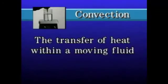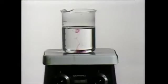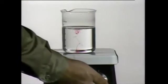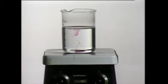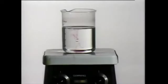Another form of heat transfer is convection. Convection is the transfer of heat within a moving fluid. Convection can be divided into two categories: natural convection and forced convection. We'll use this container of water and dye to show how natural convection works. As the water is heated, the water closest to the bottom is heated more than the water elsewhere. As the temperature of the water on the bottom increases, that water becomes lighter or less dense and rises upward. At the same time, the cooler water sinks to the bottom of the container.